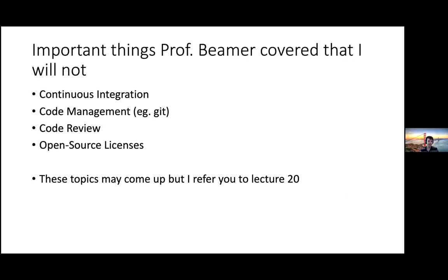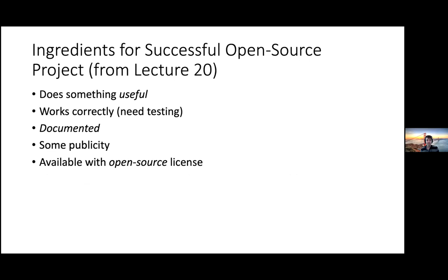Looking back at lecture 20, Professor Beamer covered several things in detail that are very important: continuous integration, code management using version control like Git, code review, and open source licensing. These are critical for an open source project. Don't take my not covering them in depth as a sign they're not important — they're important. There are a lot of great resources out there, and I'll refer you back to that lecture.